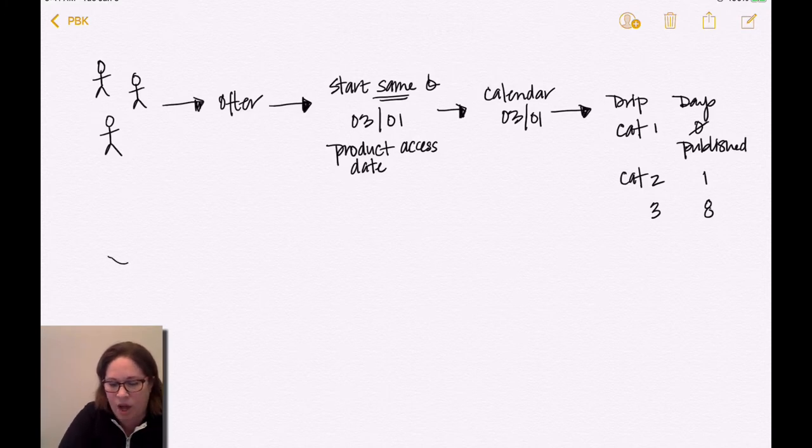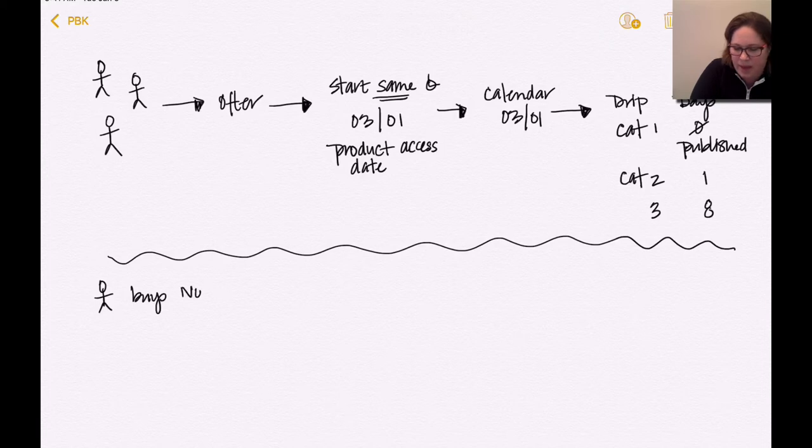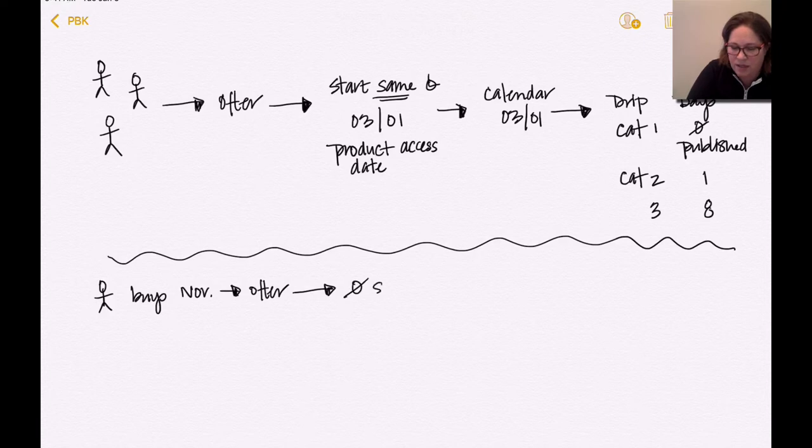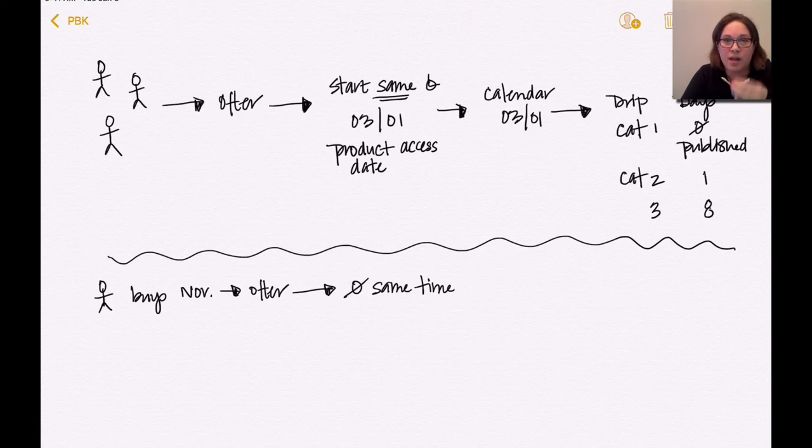Now, let's contrast that with people individually. So this person buys, and let's say they buy in November. They buy the same offer, but there's not the same time, okay? This is where you're going to run into more people calling this an evergreen course, meaning there's no start and stop.